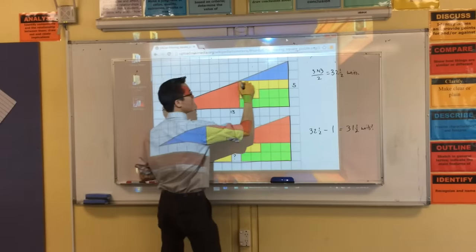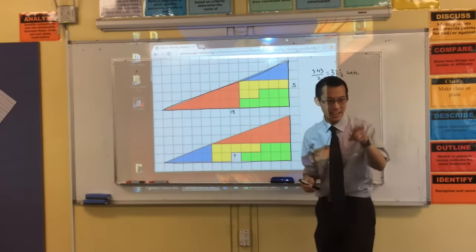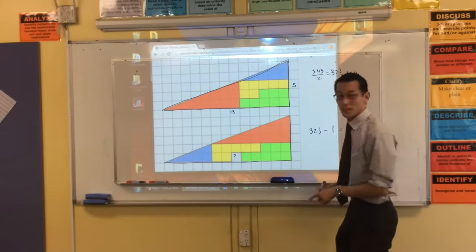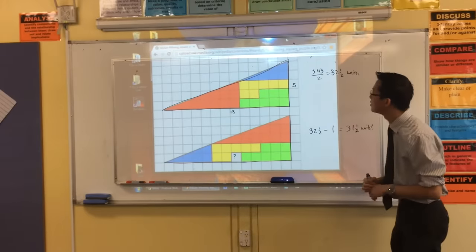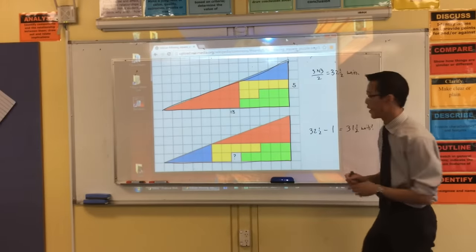But in fact, it is not a triangle at all. It is actually a quadrilateral, okay? Do you want to give us some more detail, Raphael? Because the gradient of the blue triangle is different to the gradient of the red triangle. Very good, okay.